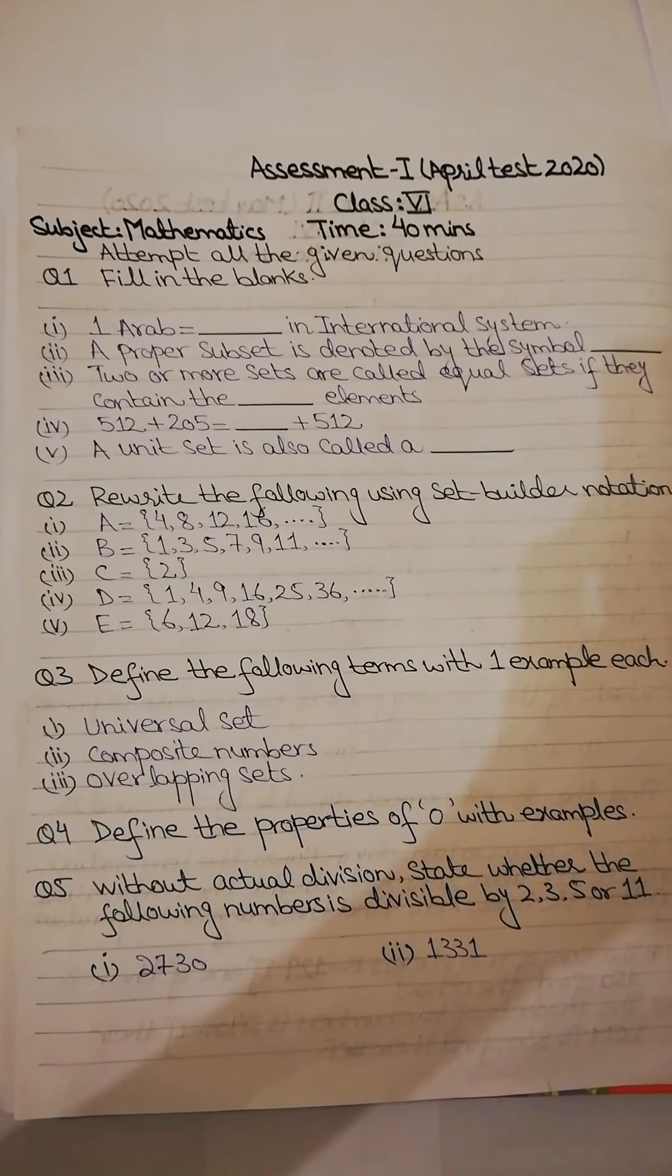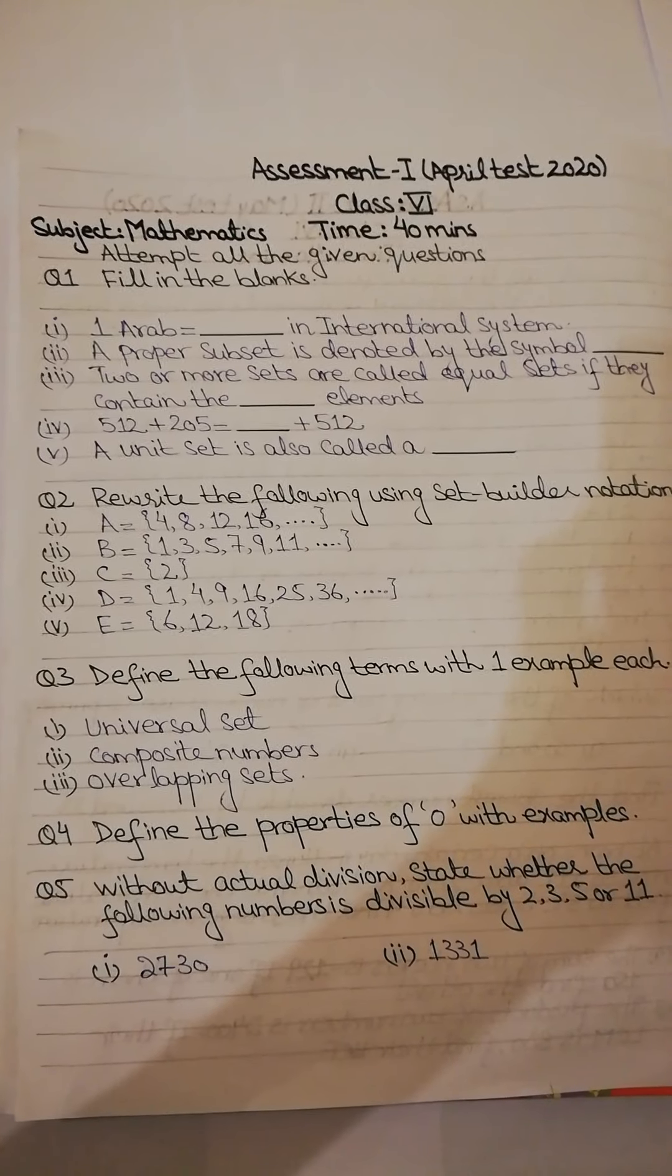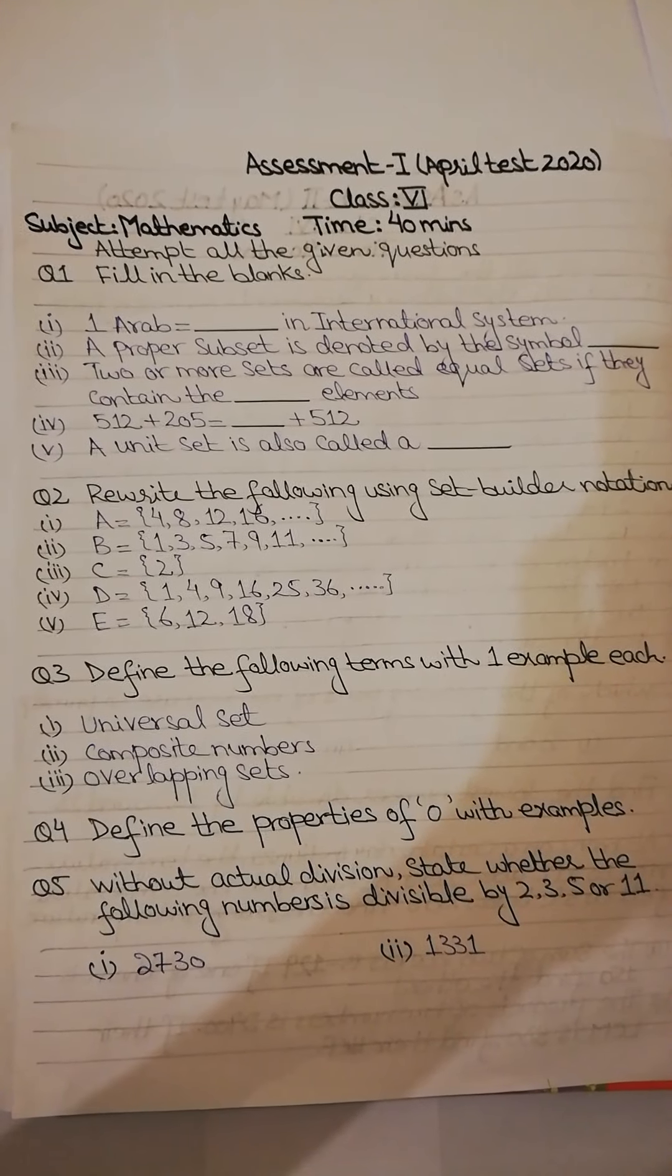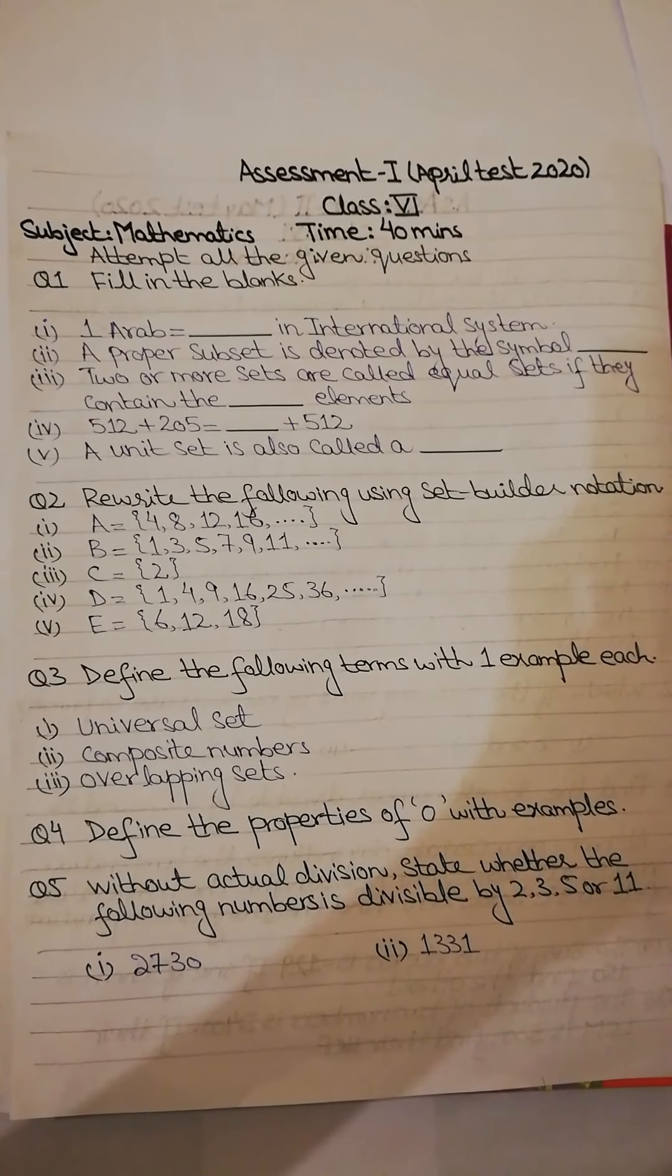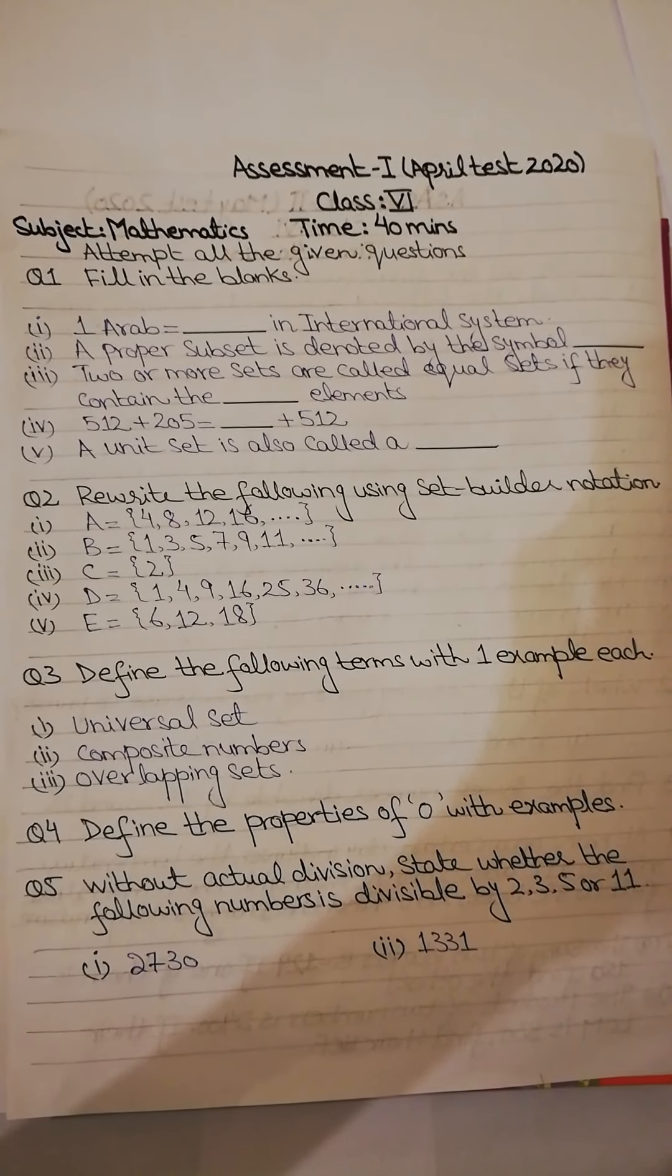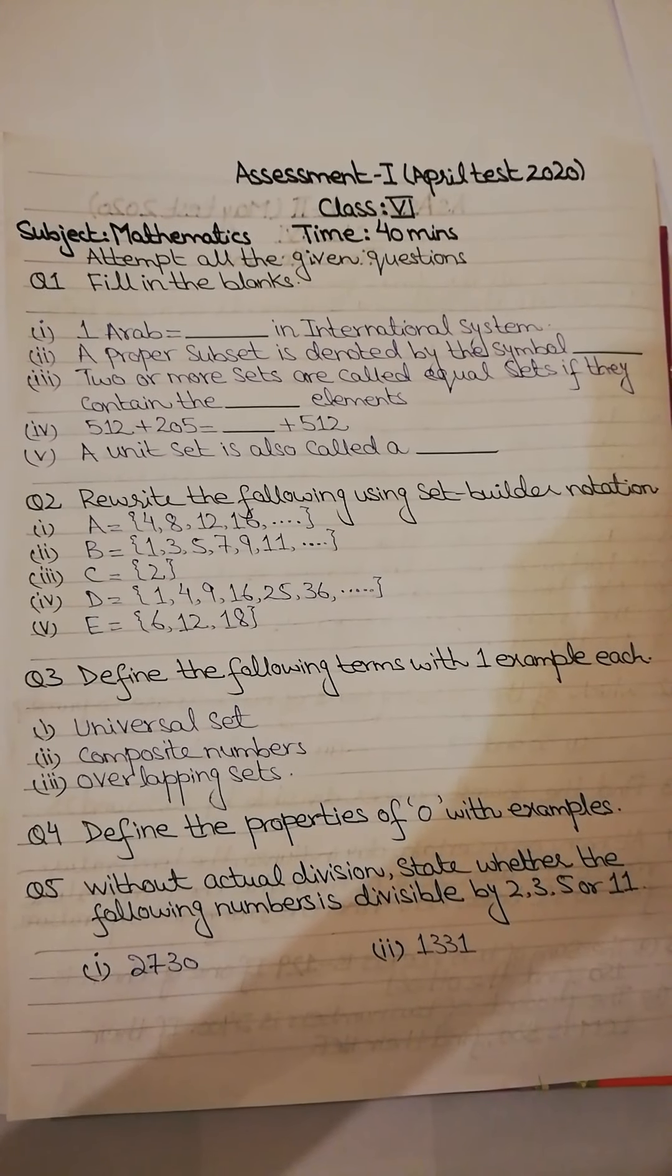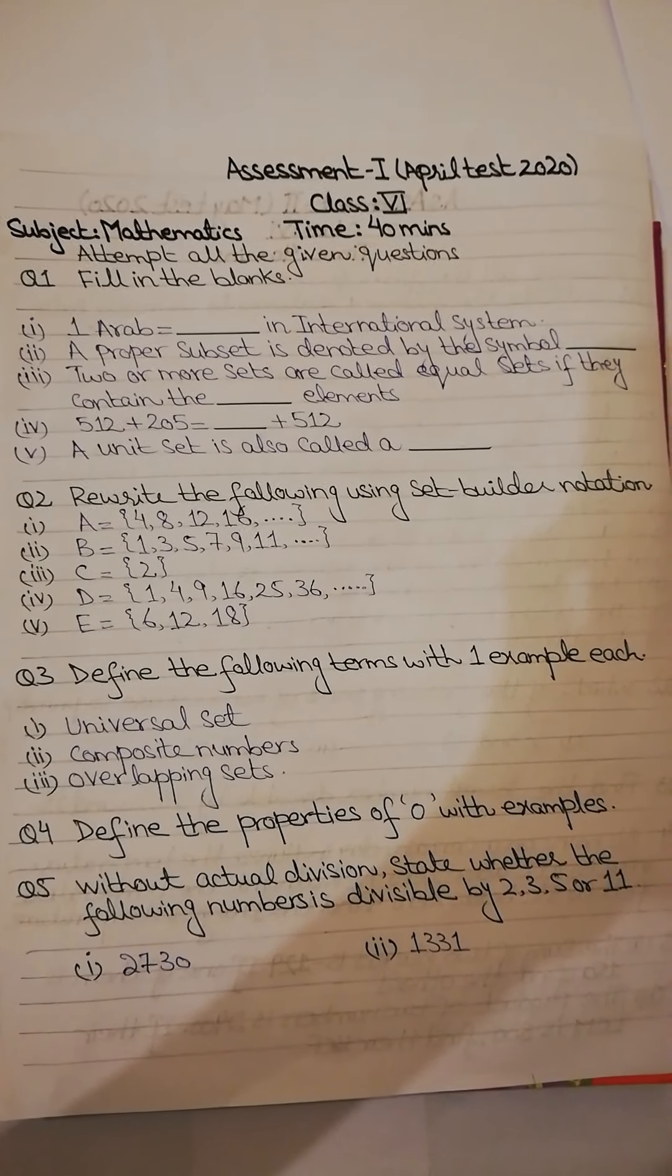Okay, now question number 3 is define the following terms with one example each. Now you have here some terms given and you have to define them with one example. First is universal set, second, composite numbers, third, overlapping sets.